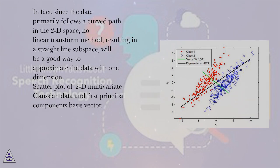In fact, since the data primarily follows a curved path in the 2D space, no linear transform method, resulting in a straight line subspace, will be a good way to approximate the data with one dimension.